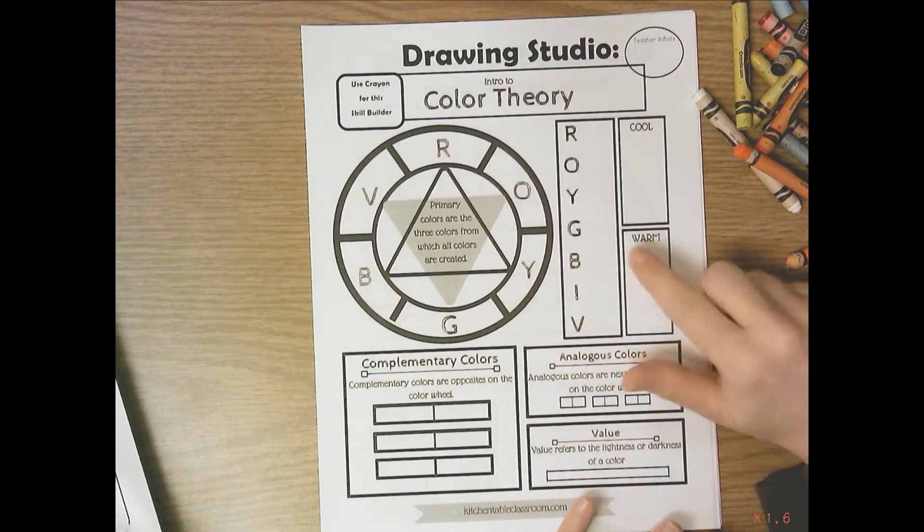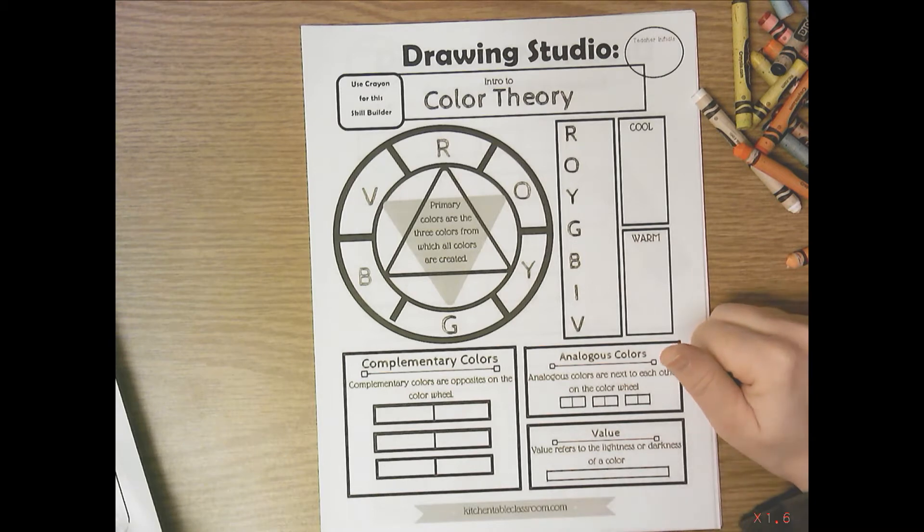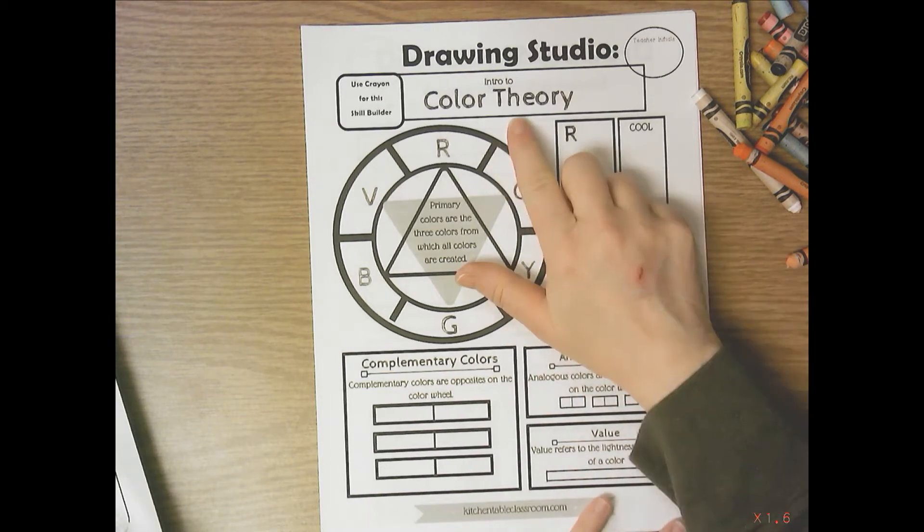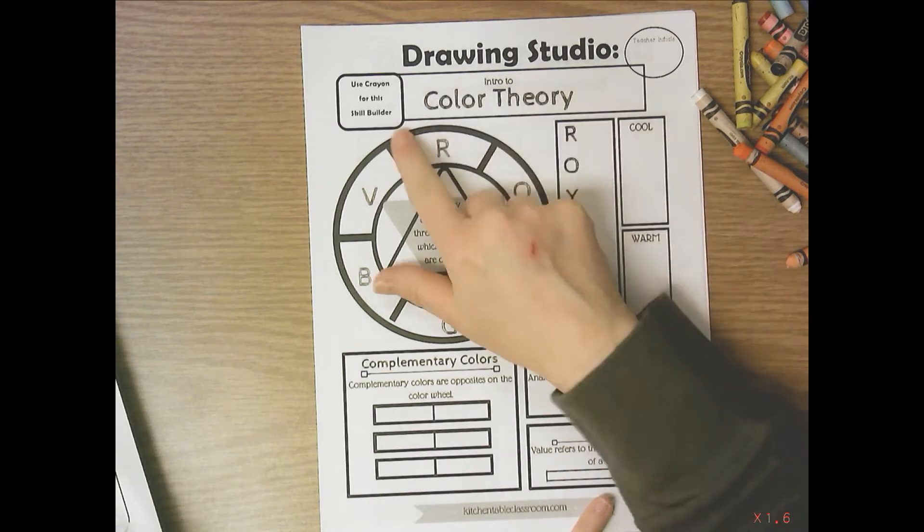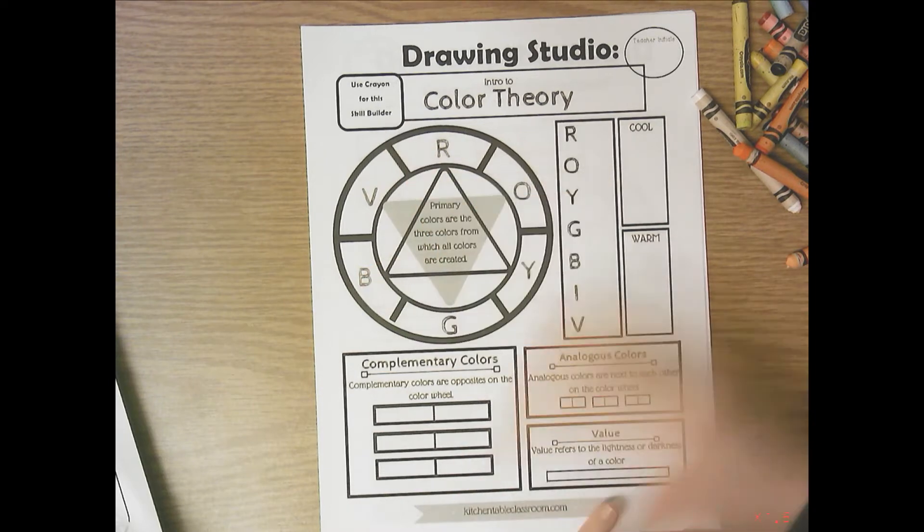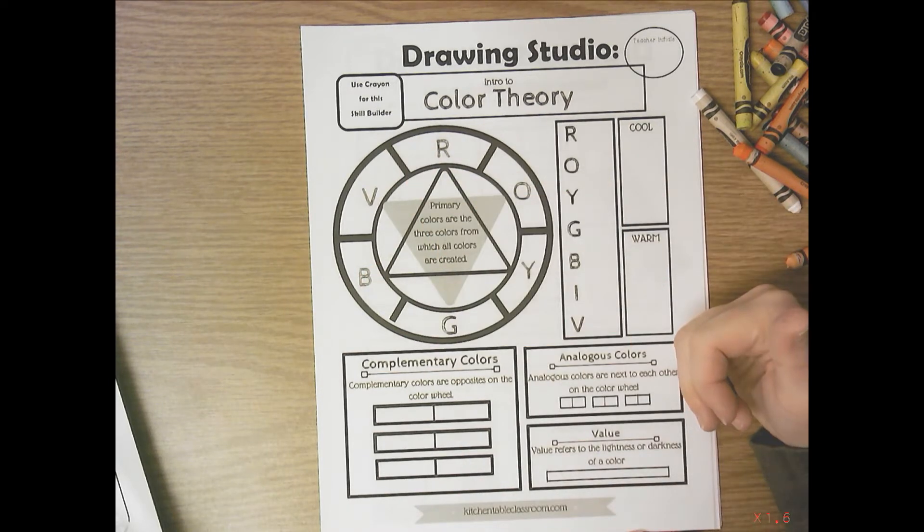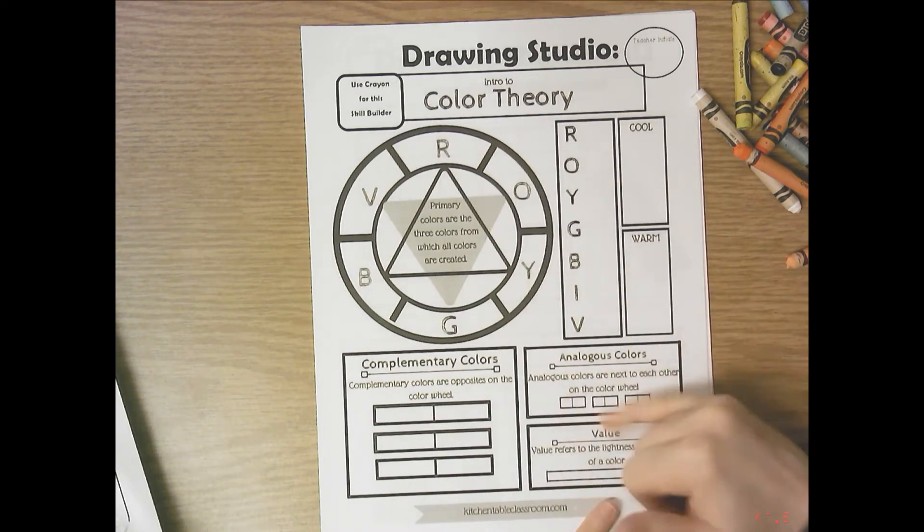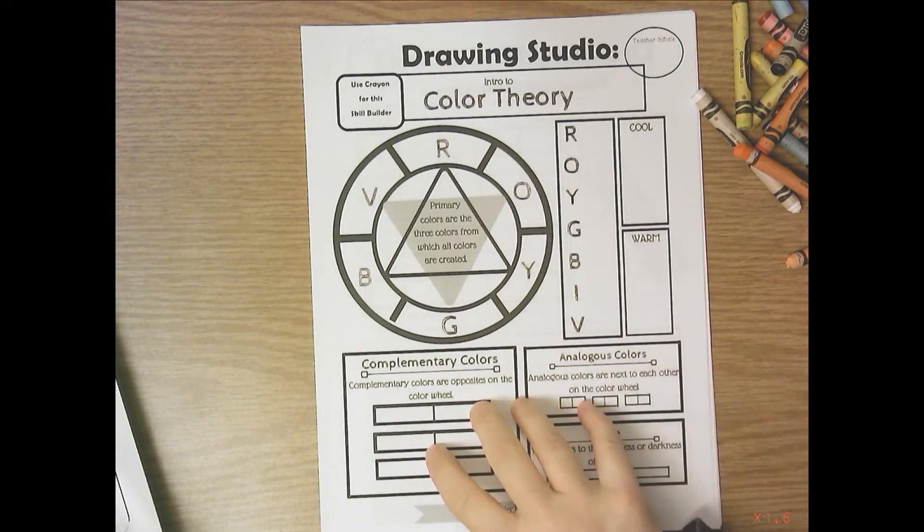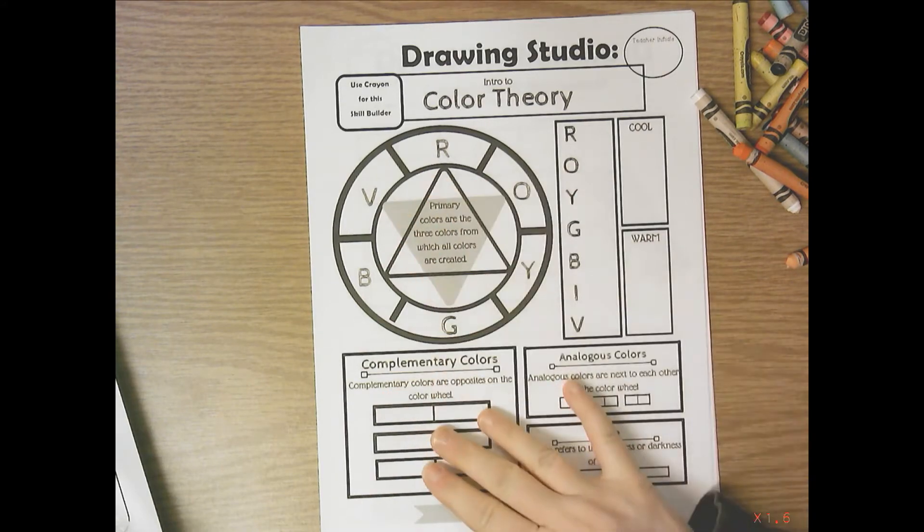Hello, so we're going to work on our first crayon skill builder page, and it's all about color theory. Use crayons for the skill builder. It's essentially a color sheet you're following along, but you have to use the color wheel to help you answer your questions down here.